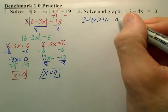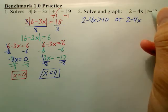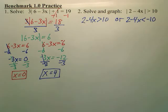But greater than, so that's an or. We put the word or, and I'm going to write 2 minus 4x again, but now I'm going to flip the sign and change that to a negative. And now I solve both of these.